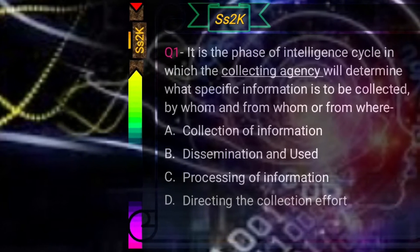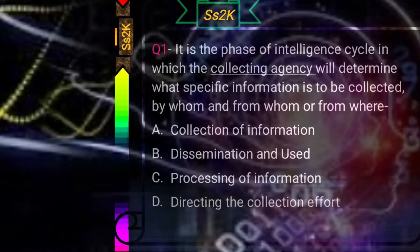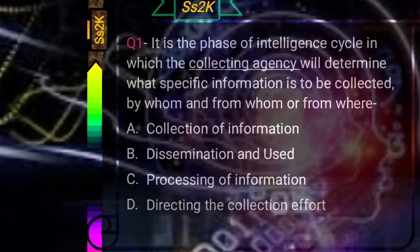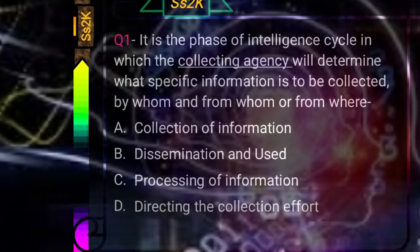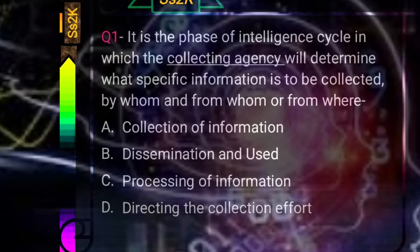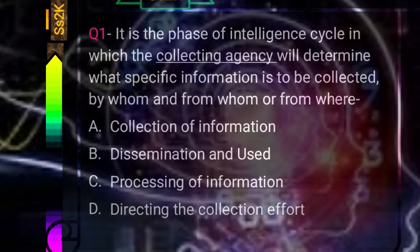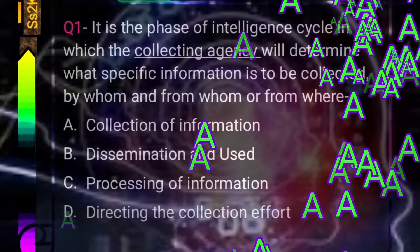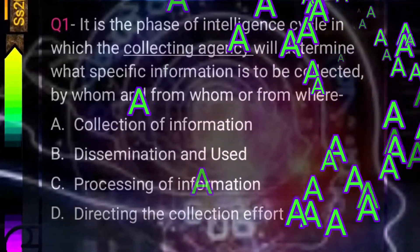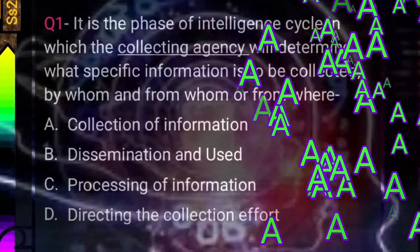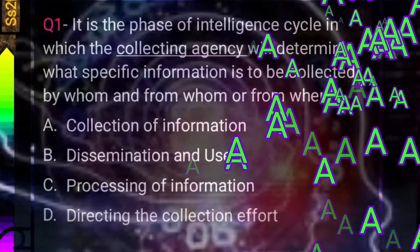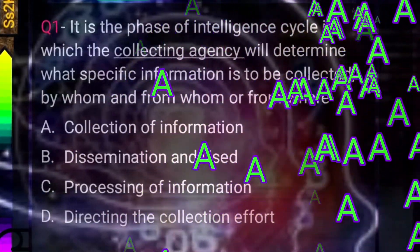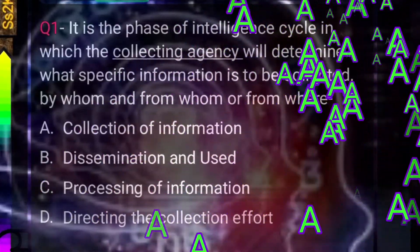Question number one: It is a phase of the intelligence cycle in which the collecting agency will determine what specific information to be collected, by whom, and from whom or from where it will be collected. Letter A: collection of information; letter B: dissemination and use; letter C: processing of information; and D: directing the collection effort. The answer is A — collection of information. This is the second phase of the intelligence cycle, wherein the collecting agency determines the area where information will be collected, who it will be collected from, and who will collect it.